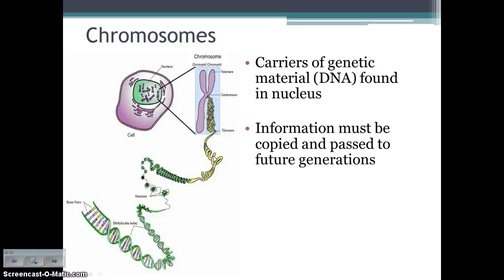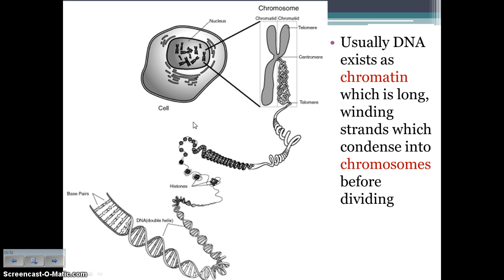Before we talk about mitosis, we need to know what a chromosome is. Chromosomes are carriers of genetic material — DNA — found in the nucleus. This information has to be copied to be passed on to future generations. Label your diagram on your notes organizer: label the base pairs, the double helix, the centromere, the telomere, the chromatids, and the whole X structure that makes up the chromosome. DNA usually exists in a form called chromatin — long, loose, winding strands of DNA that eventually condense into chromosomes.